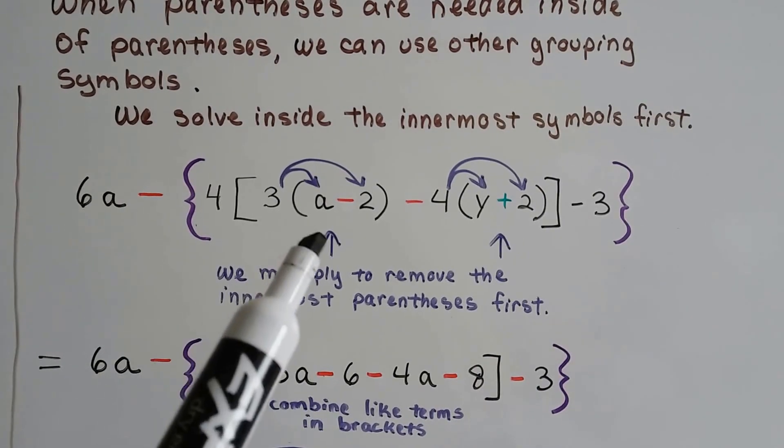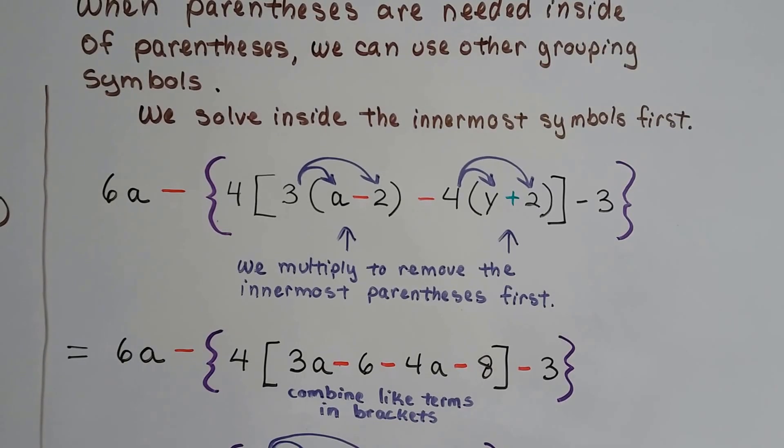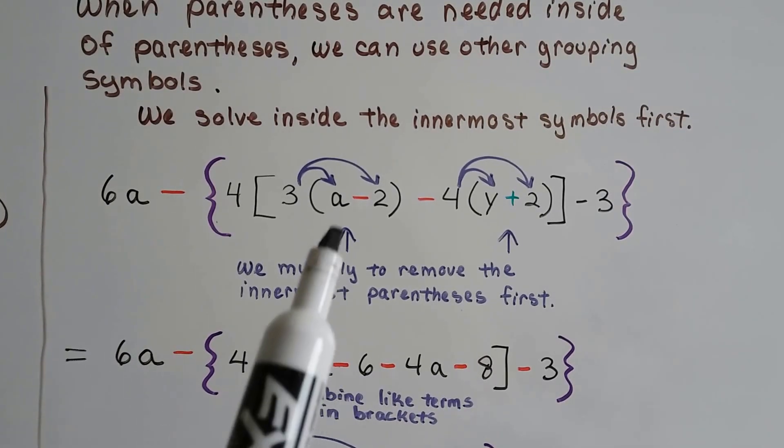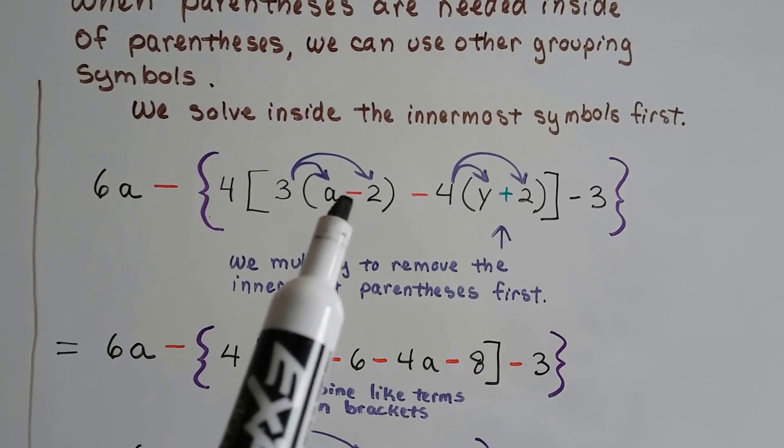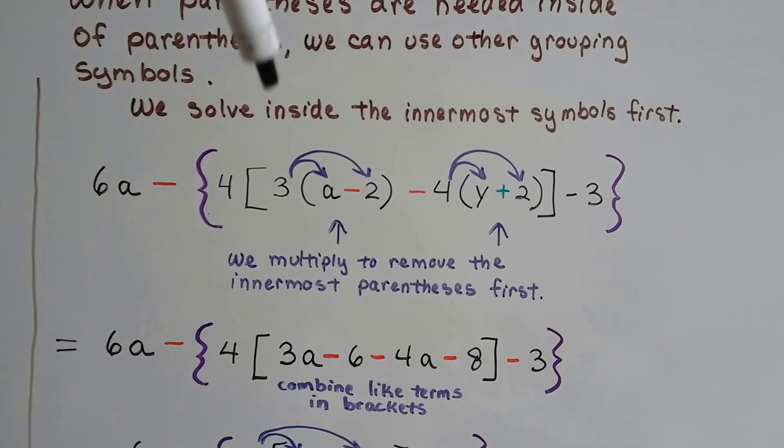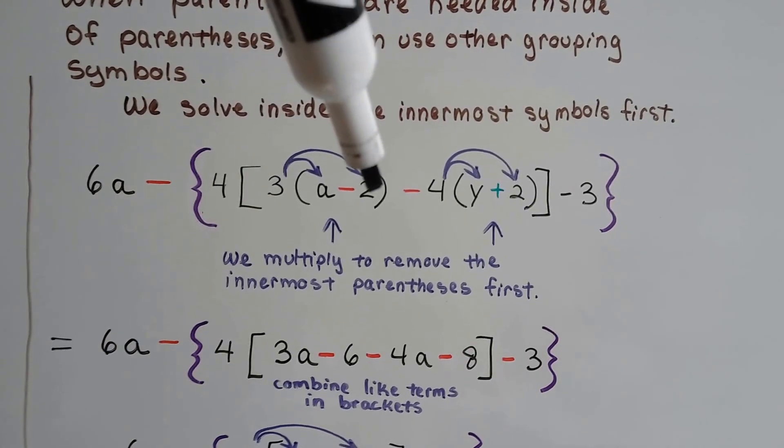So here we have parentheses that are inside of brackets that are inside of braces. So we do this distributive property to the very, very inside, the innermost ones, which are the parentheses. And we distribute 3a and 3 to the negative 2.